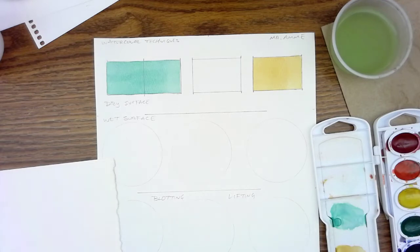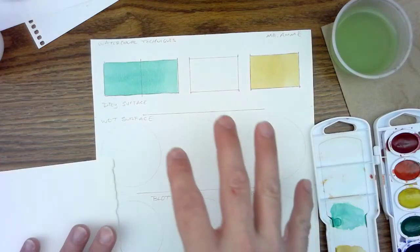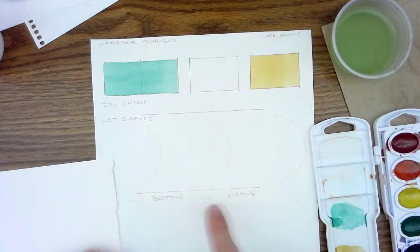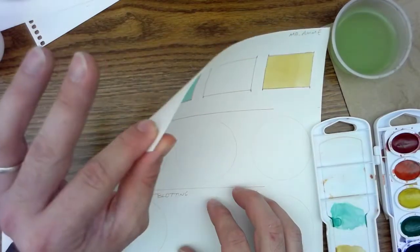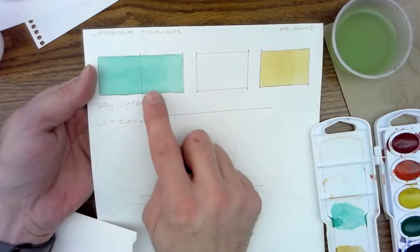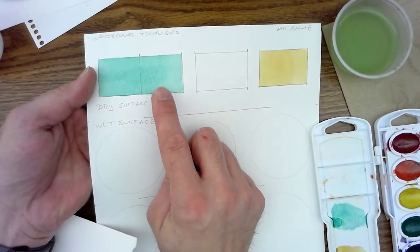With watercolor techniques, the first thing we want to think about is the paper. This is set up on a thinner piece of watercolor paper. But you can see when you paint on it, it does have a little bit of a texture, a little bit of a tooth in there.